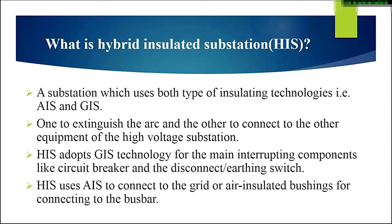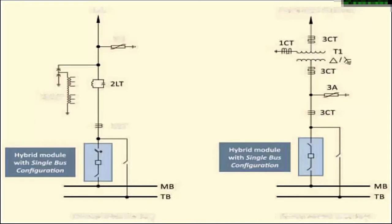HIS uses both air and gas insulation technologies. HIS adopts GIS technology for the main interrupting components, where high insulating medium is required — SF6 is a better insulating medium than air. So GIS technology is used for circuit breakers and disconnecting switches. HIS uses AIS where low insulating properties are required, like for bus bars, and to connect to the grid or insulated bushings for connecting to the bus bars. HIS produces space savings at low cost.